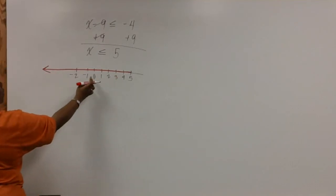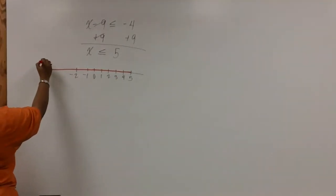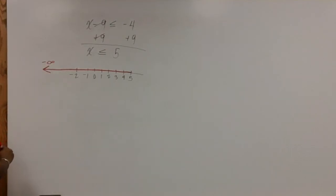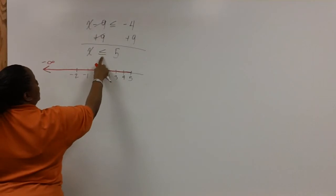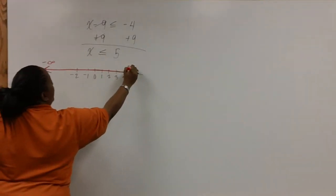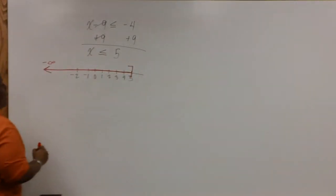This arrow will continue to point towards all negative numbers, or negative infinity. And because there's a bar under this inequality, we need a bracket on 5. So this is the graph for the inequality.